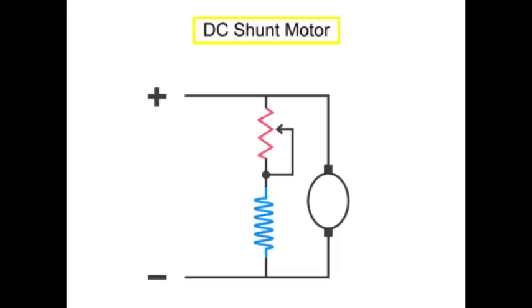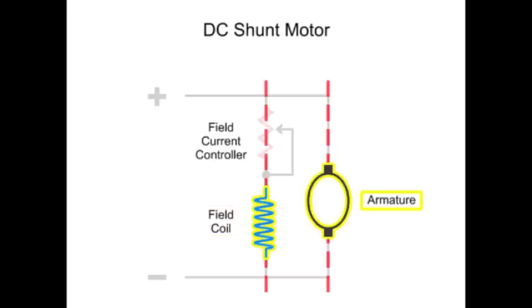A DC shunt motor is a DC motor that has the field coil connected in shunt or parallel with the armature.